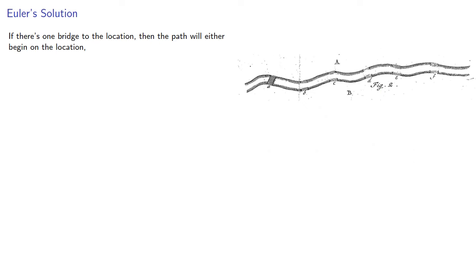So let's think of this a little bit more. If there's only one bridge to a location, then the path will either begin on the location, and so the location would be the beginning of our path, or end on the location, and in either case the location will appear once.